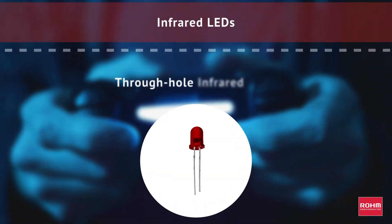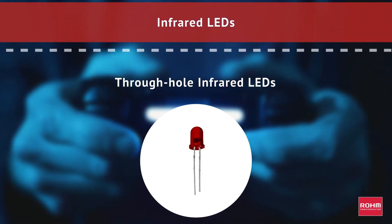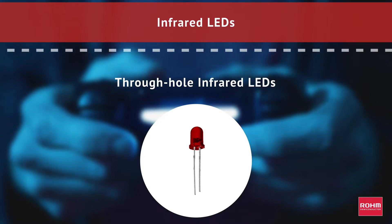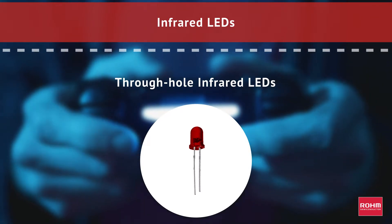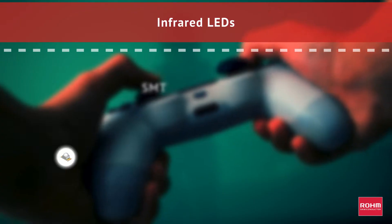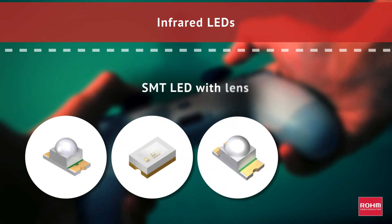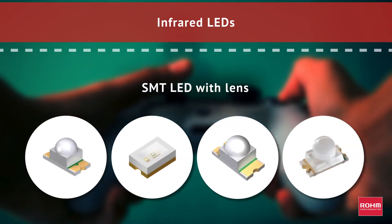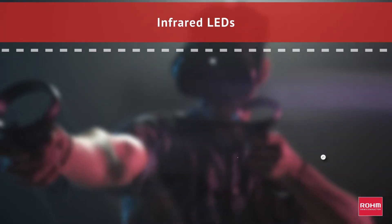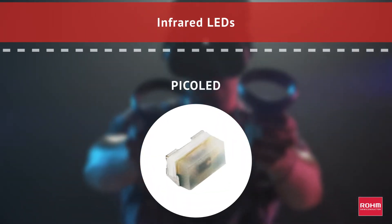Roam offers a myriad of infrared LEDs in either through-hole types with LEDs housed in a clear plastic resin mold, or compact surface mount packages. Some surface mount infrared LED models use a lens to narrow directivity and increase brightness. The ultra-compact size of the Pico LED Series IR LEDs,